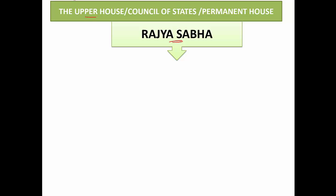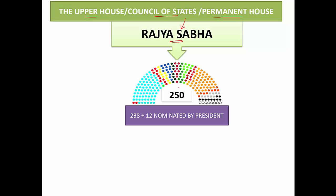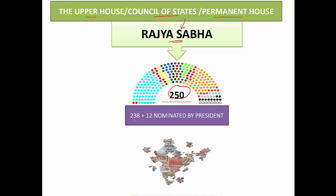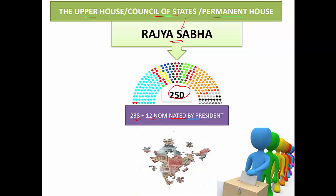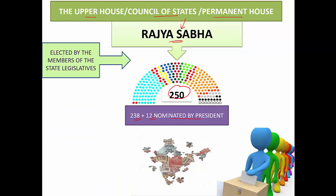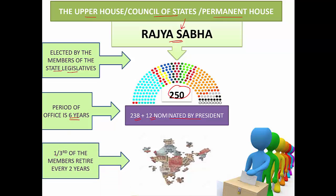The upper house, the Council of States, also called the Rajya Sabha, has a total of 250 seats. Out of these, 238 are elected members from the different states and 12 are nominated by the President. This is called an indirect election, as these are elected by members of the state legislatures. The period of office is six years, and one third of these members retire every two years.